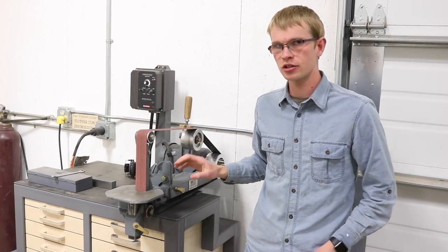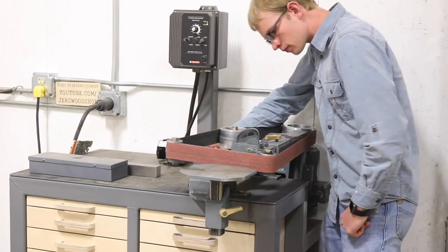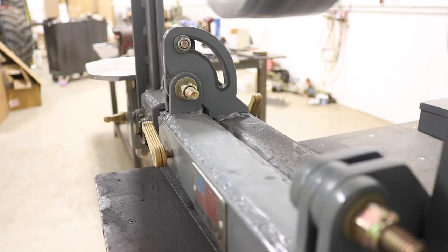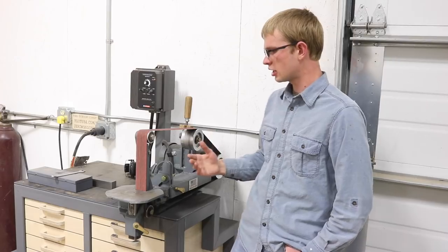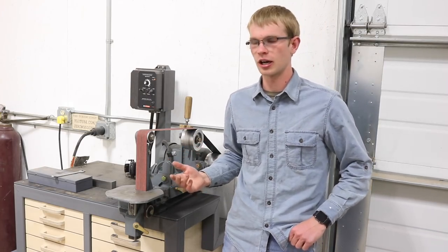This is my homemade 2x72 inch tilting belt grinder. It's designed to serve as either a vertical or a horizontal grinder, so there's a hinge down the middle. It's also designed to be very heavy duty so it doesn't chatter or vibrate and should last a very long time.